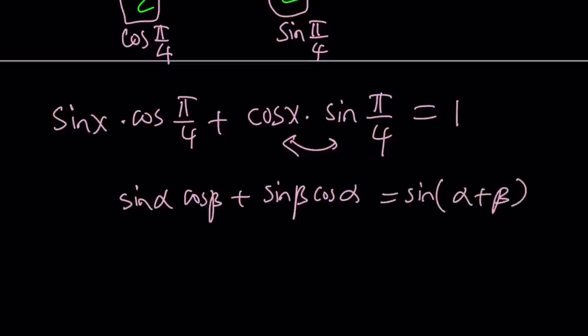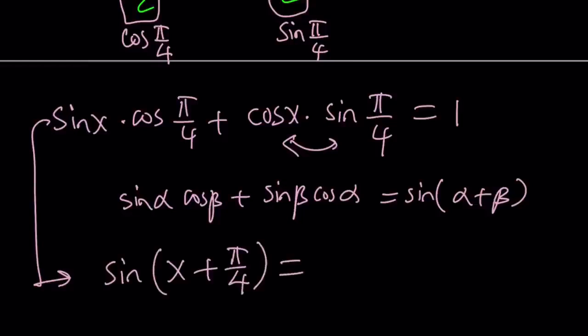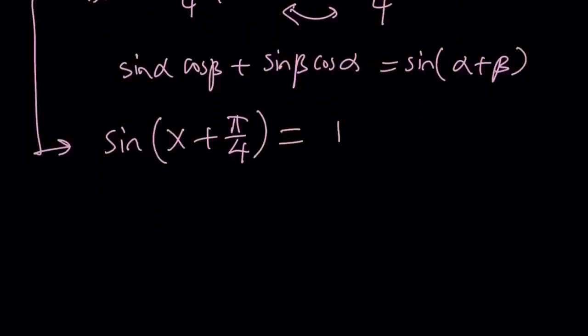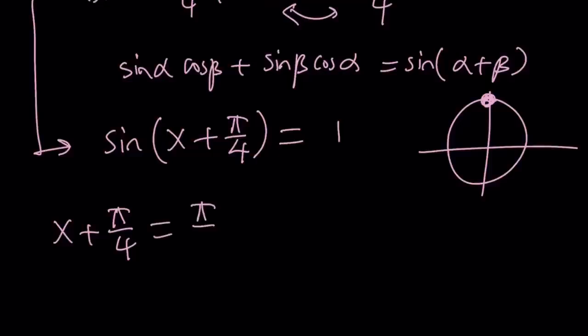And this is equivalent to sine alpha plus beta. So this is equivalent to sine of x plus pi over 4 equals 1. Now you're thinking sine of which angle is 1? The answer is pi over 2 on the unit circle. But you can also add multiples of 2 pi. So x plus pi over 4 is pi over 2 plus 2n pi which is even multiples of pi. Let's go ahead and separate pi over 4.